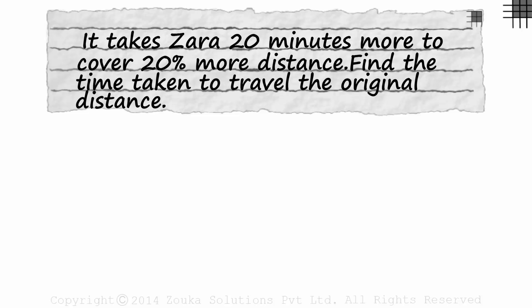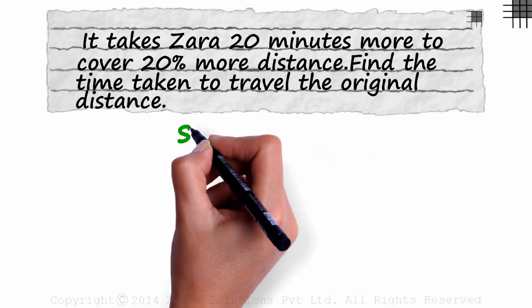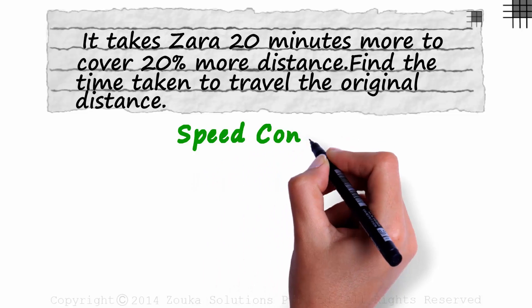Now this is not a straightforward TST problem where we are given two parameters and asked to find the third. This example can be divided into two parts. First, Zara walking at her speed for some distance. And second, Zara continues walking at the same speed for 20 more minutes to cover some more distance. Did you hear me well? I said same speed. It means the speed is constant in both the parts.